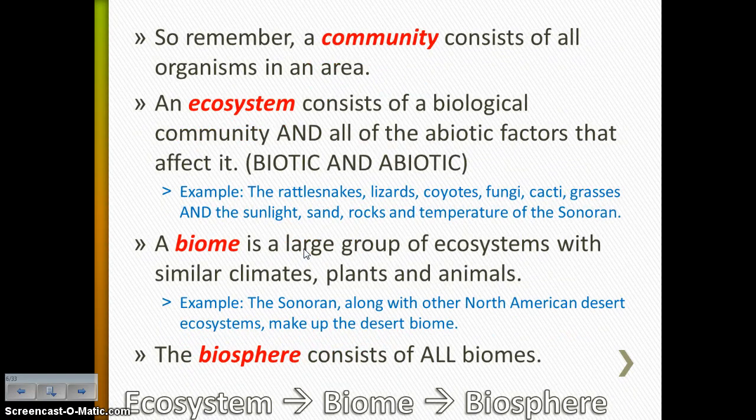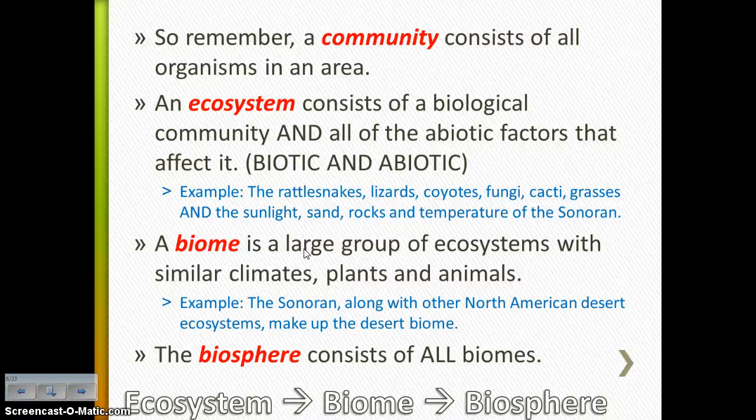Going even bigger than community, you have the biotic factors plus the abiotic factors — that would be your ecosystem. So we have our community: rattlesnakes, lizards, coyotes, fungi, cacti, grasses. But now in an ecosystem, we're also going to have sunlight, sand, rocks, and of course the temperature of the Sonoran. All the biotic and the abiotic make up the ecosystem.